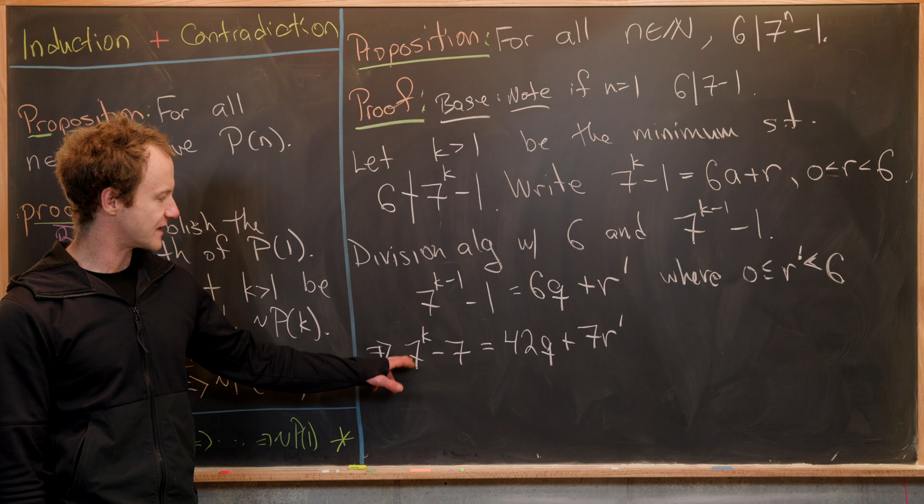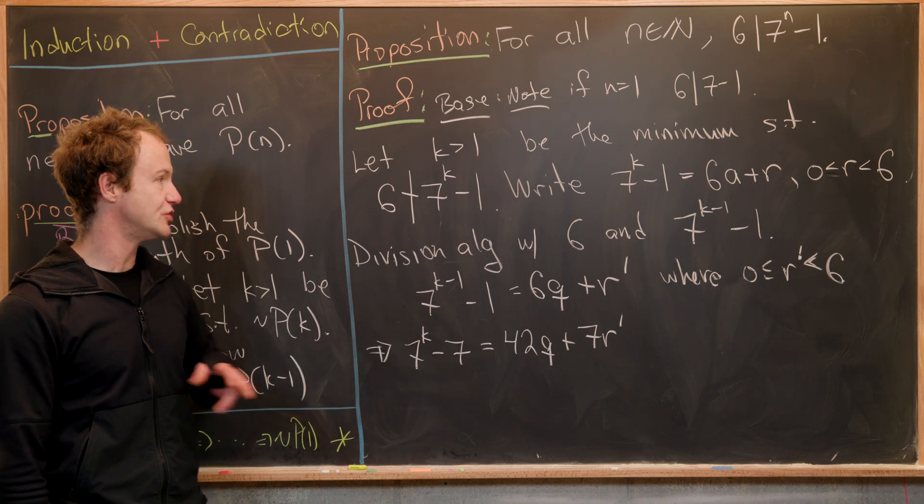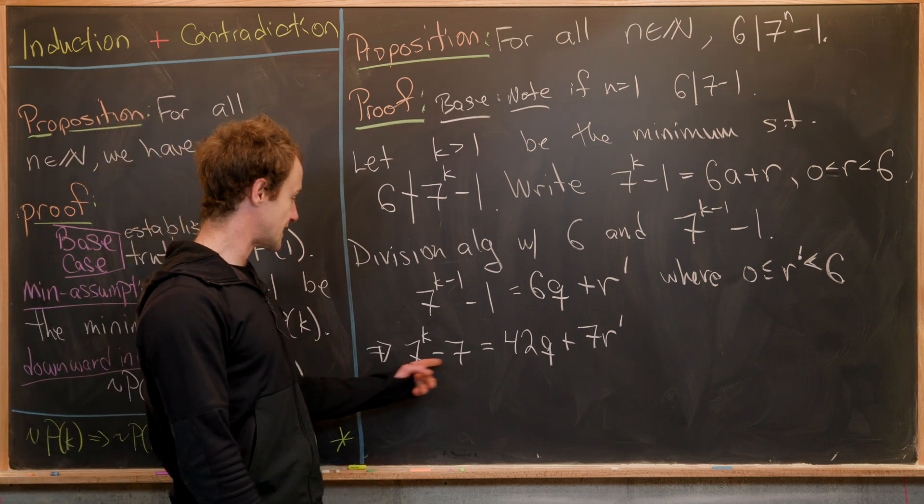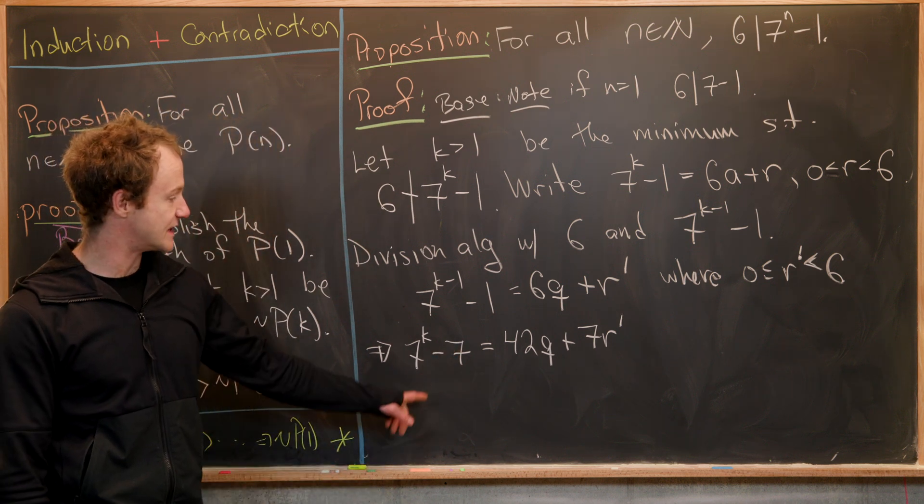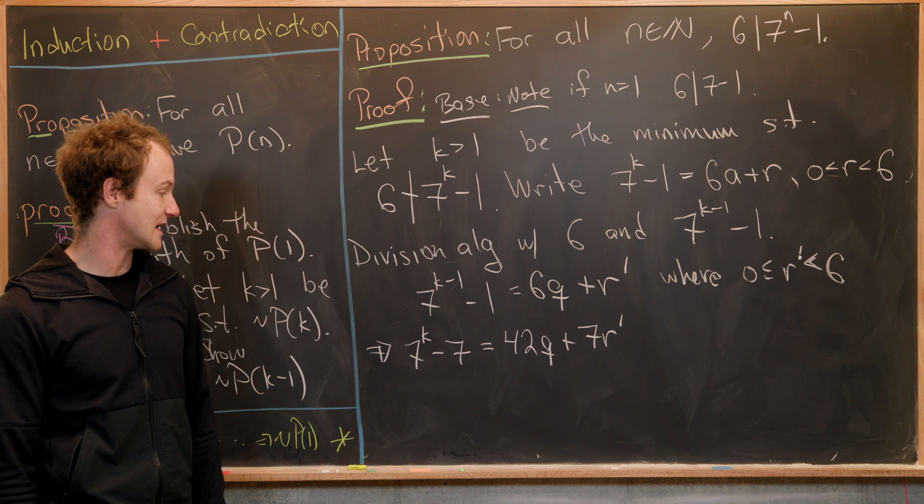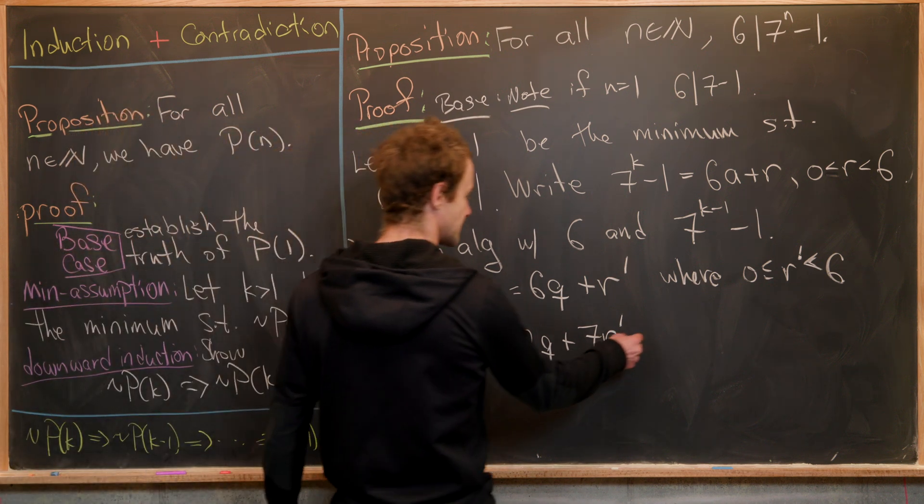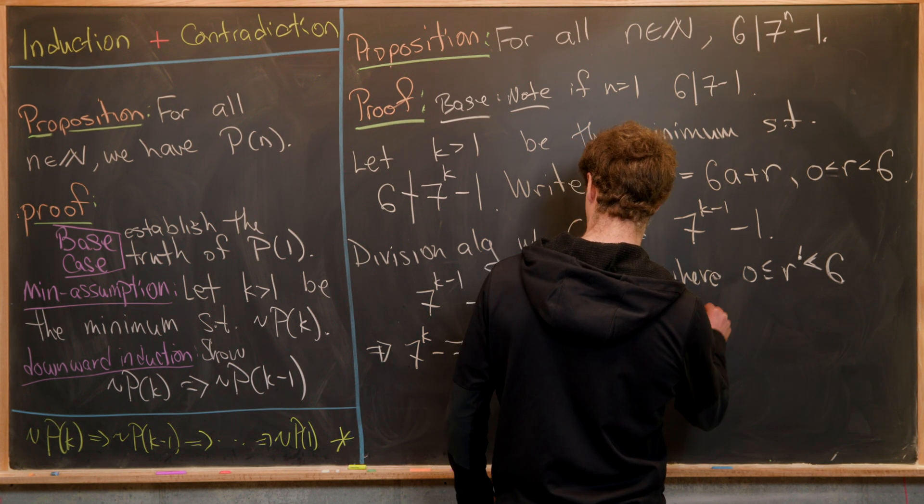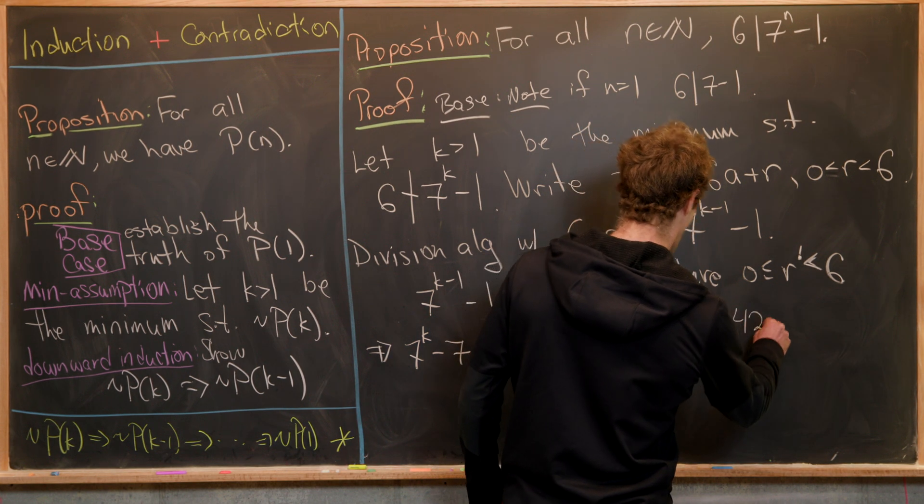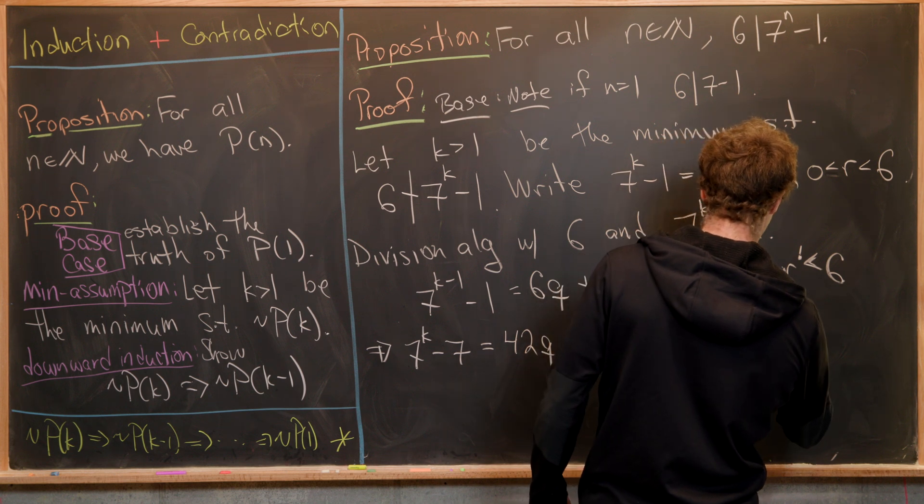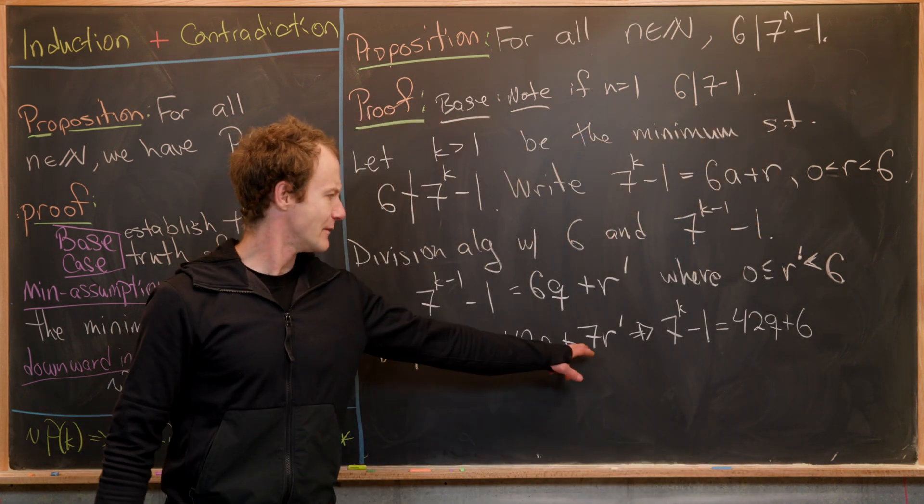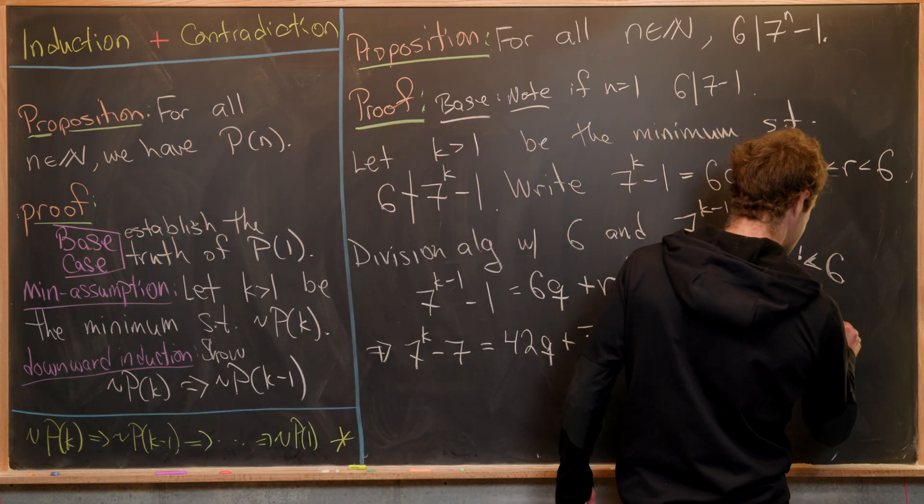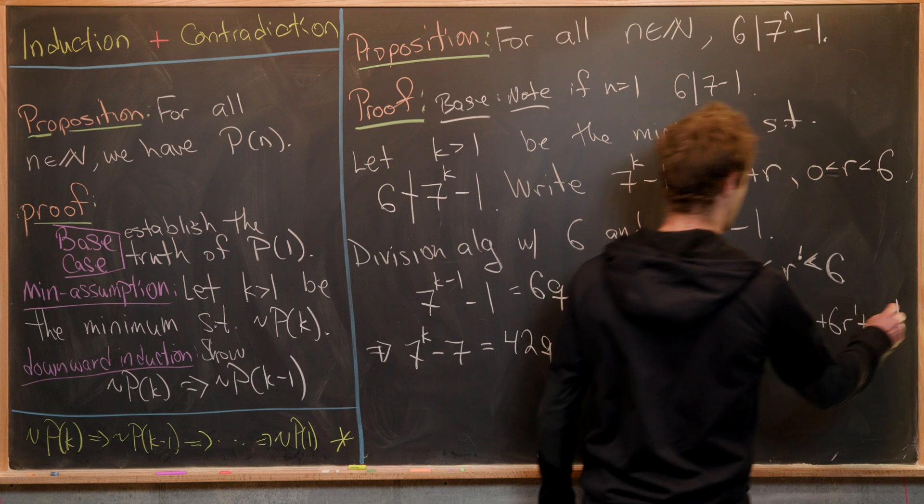We don't really know how to deal with seven to the k minus seven, but we do know how to deal with seven to the k minus one. Let's rewrite this so we have seven to the k minus one—we can do that easily by adding six to both sides. That gives us seven to the k minus one equals 42q plus six plus seven r prime.